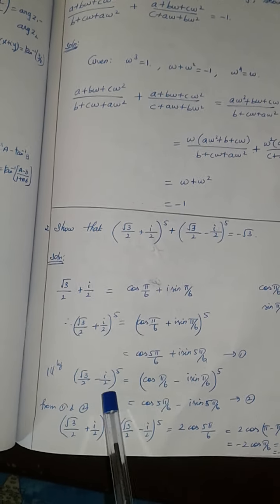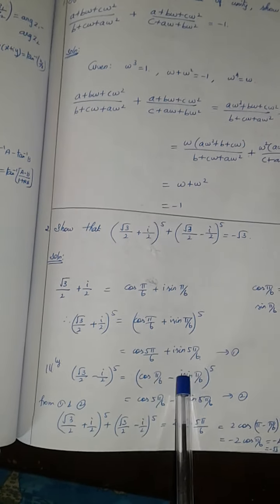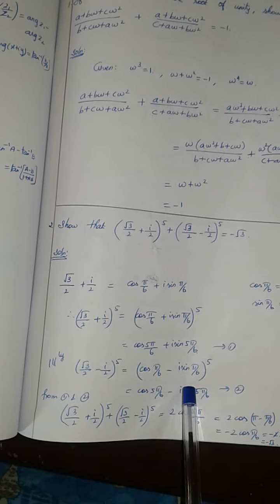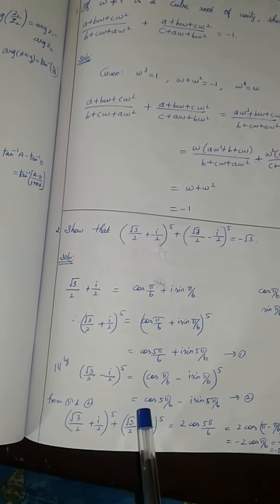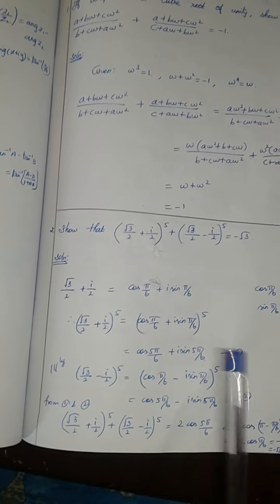Similarly, root 3 by 2 minus i by 2 to the power 5. That means minus 1 by 2 minus i times 1 by 2, which gives cos 5 pi by 6 minus i sin 5 pi by 6 to the power 5. This is equation number 2.